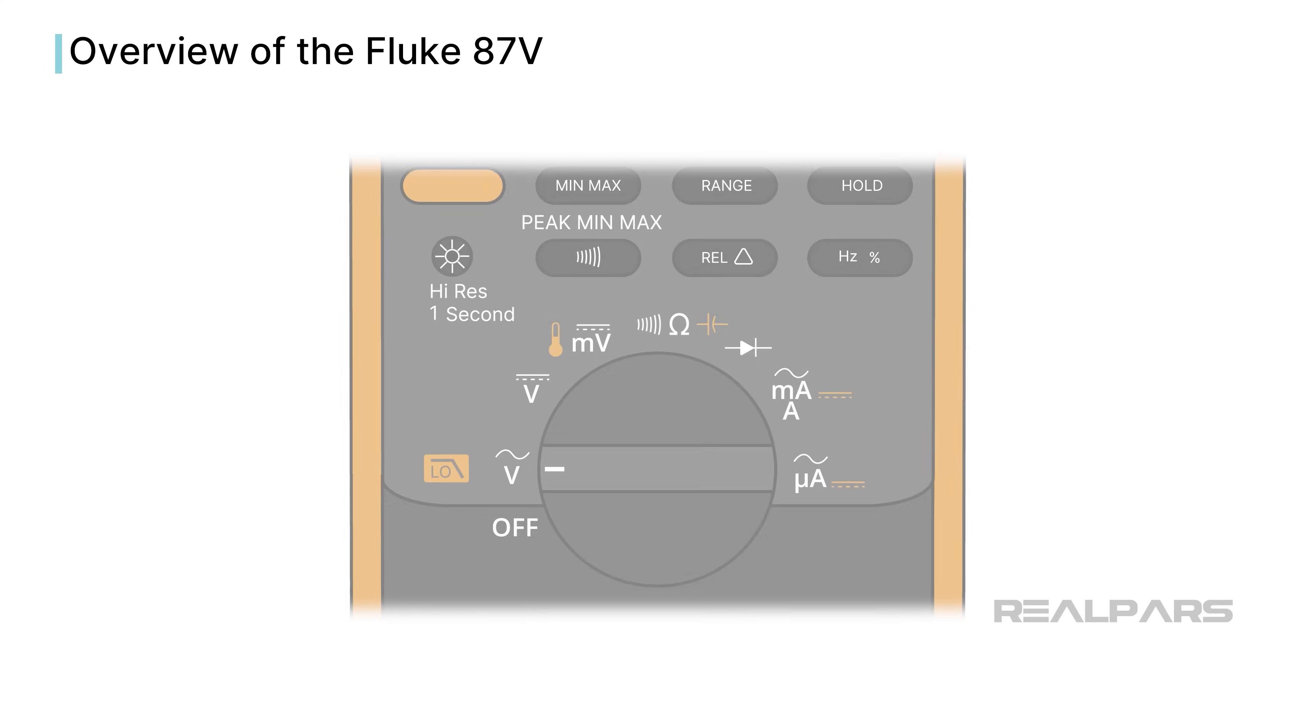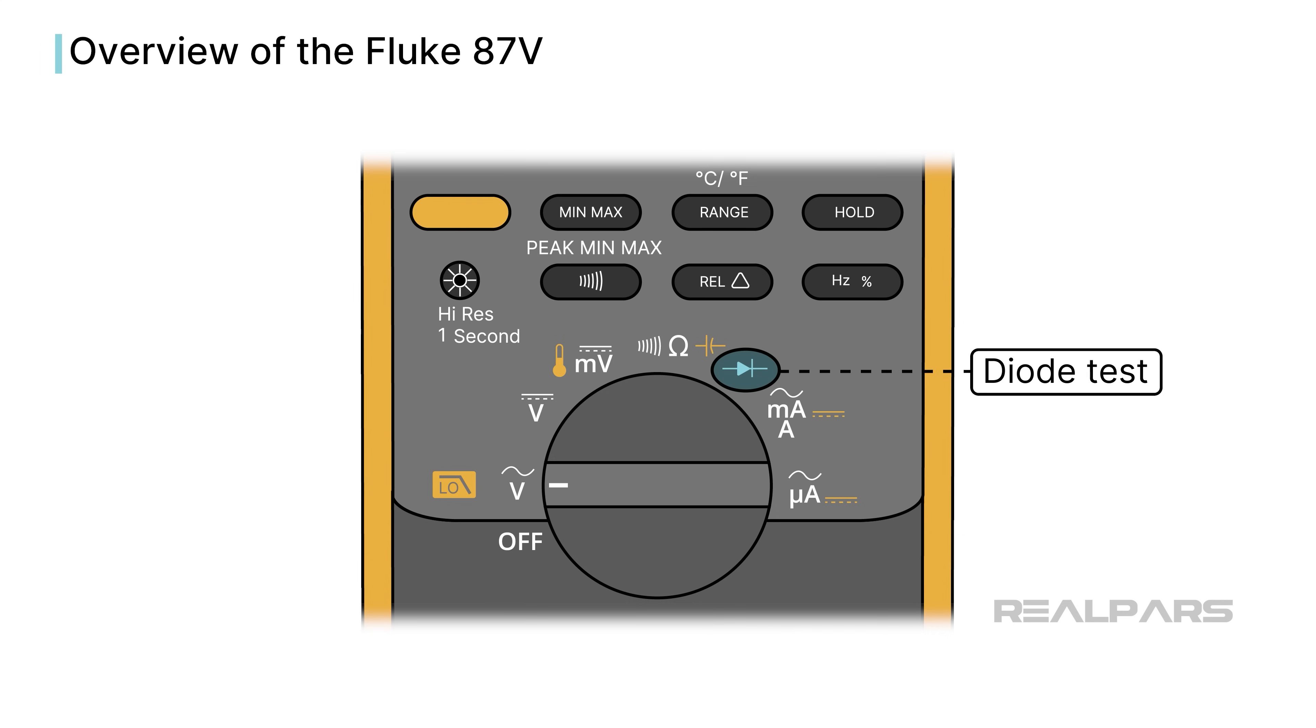Some, such as the Fluke 87-5, also perform diode testing and measure parameters such as continuity, frequency, and capacitance.